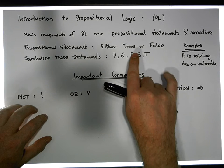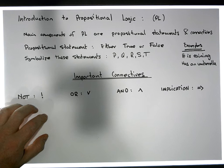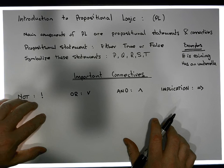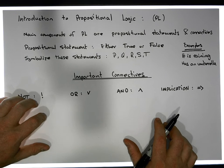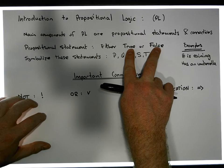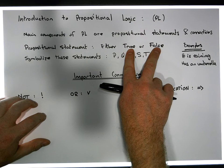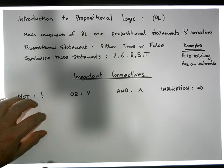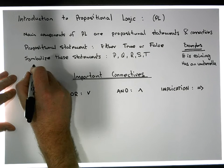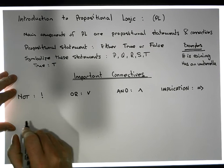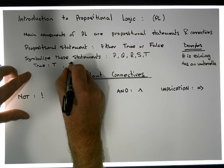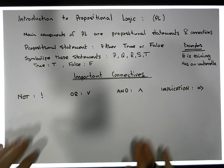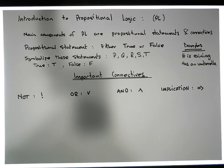Let's consider these two particular values: true and false. We're not going to get into philosophy about what true or false truly mean, but these can actually be considered to be propositions as well, because they have a particular value. True is true, false is false. True is usually symbolized by a T and false is usually symbolized by an F.